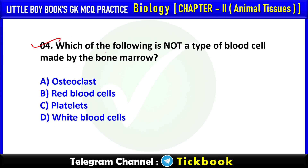Q4. Which of the following is not a type of blood cell made by the bone marrow? Option number A: Osteoclast.